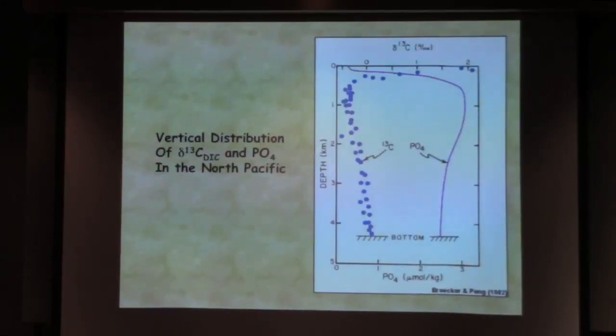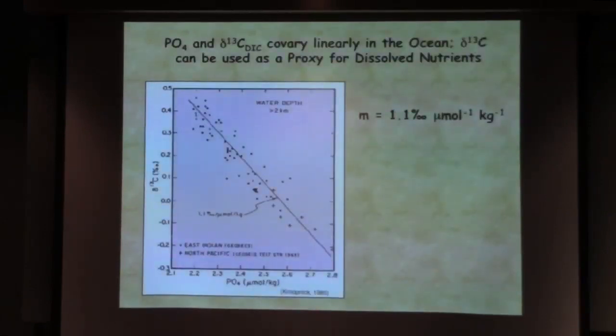Then as you move down in the water column, those nutrients increase dramatically such that they're at their maximum when the delta C-13 is at its lowest. If you plot this data up, what you find is this great relationship between delta C-13 DIC and nutrients.